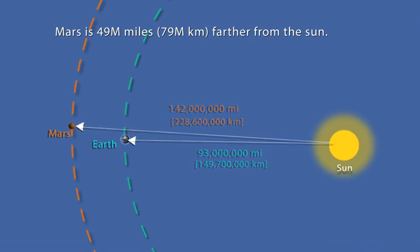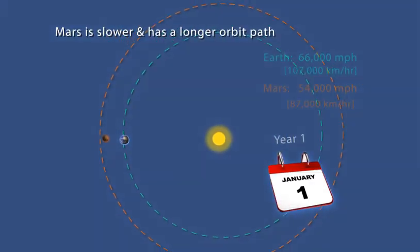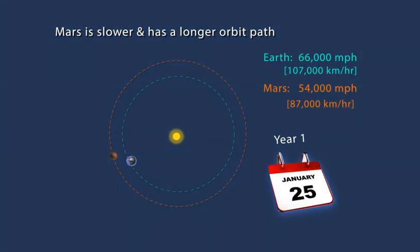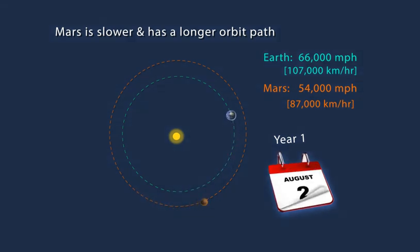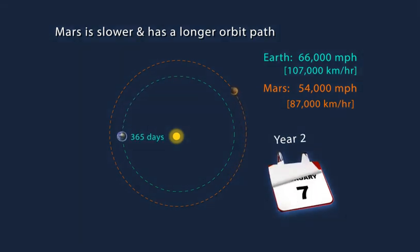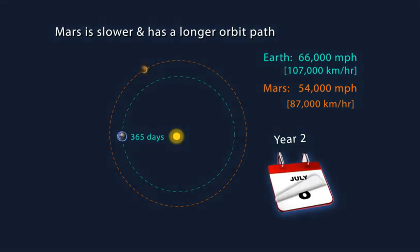Mars is moving slower than the Earth and has a longer orbital path. The Earth is revolving around the Sun at over 66,000 miles per hour and completes one orbit in about 365 and one-quarter days. Mars is revolving around the Sun at about 54,000 miles per hour and travels a much longer path than Earth. As a result, Mars takes 687 days to complete one orbit.